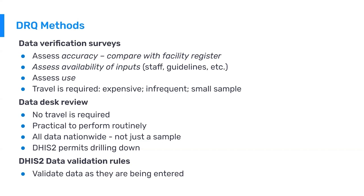The third methodology is DHIS2 data validation rules. DHIS2 has functionality that allows you to check data against predefined logic — what we call validation rules — and these can be run at multiple points or different frequencies. DHIS2 can be set up to run validation rules while the user is actually entering data. For example, if a validation rule says that malaria treated cannot be more than malaria tested, and the user enters a higher value for treated, DHIS2 automatically flags that and says there's an issue.